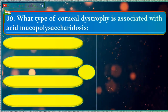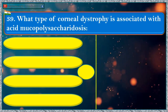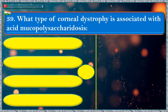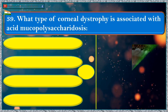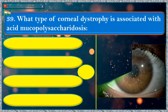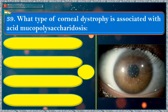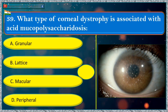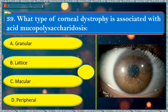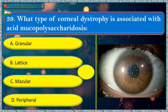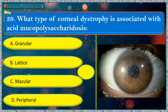What type of corneal dystrophy is associated with acid mucopolysaccharidosis? a. granular, b. lattice, c. macular, d. peripheral.